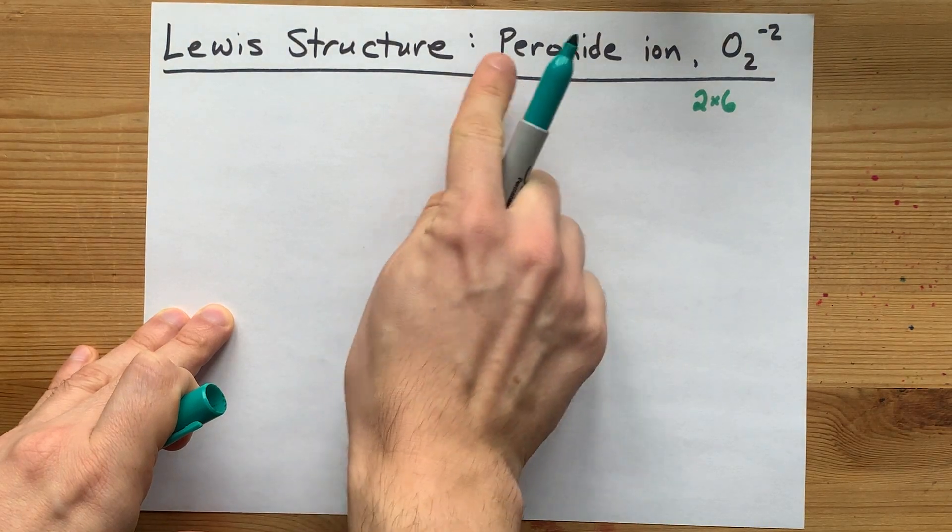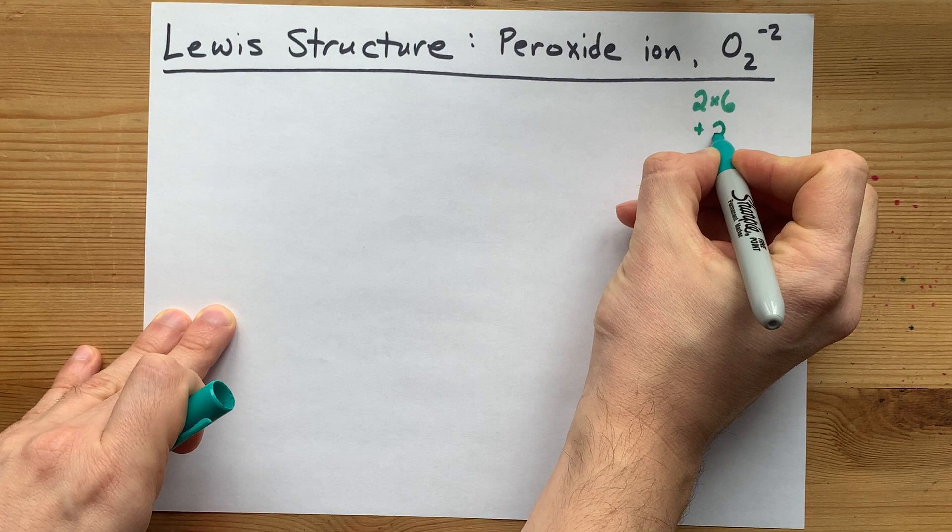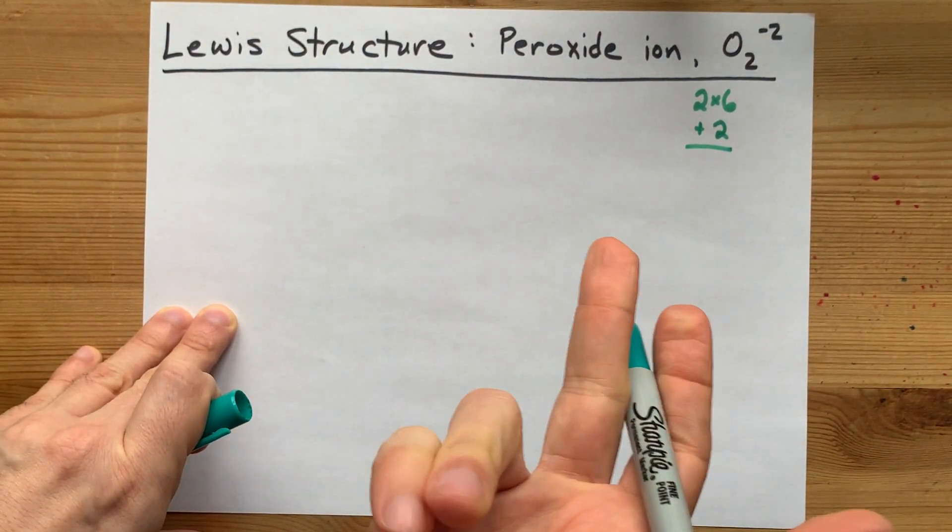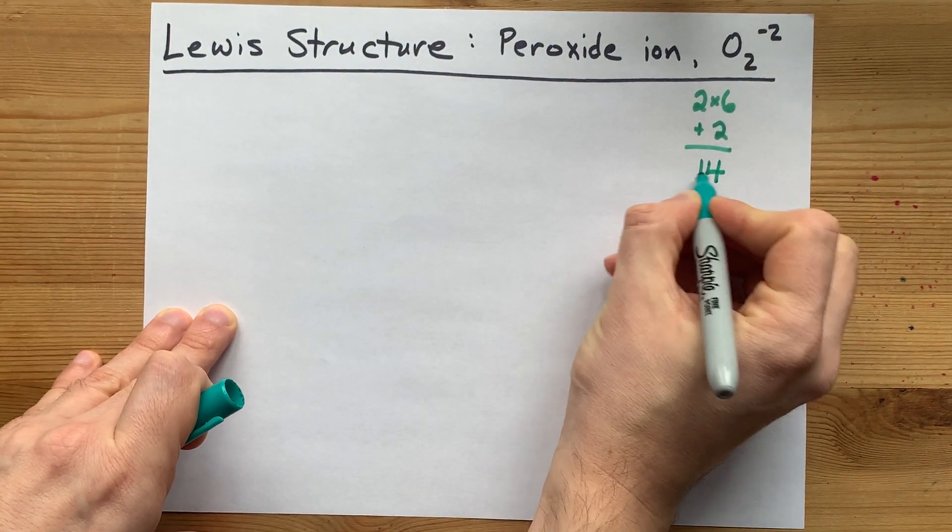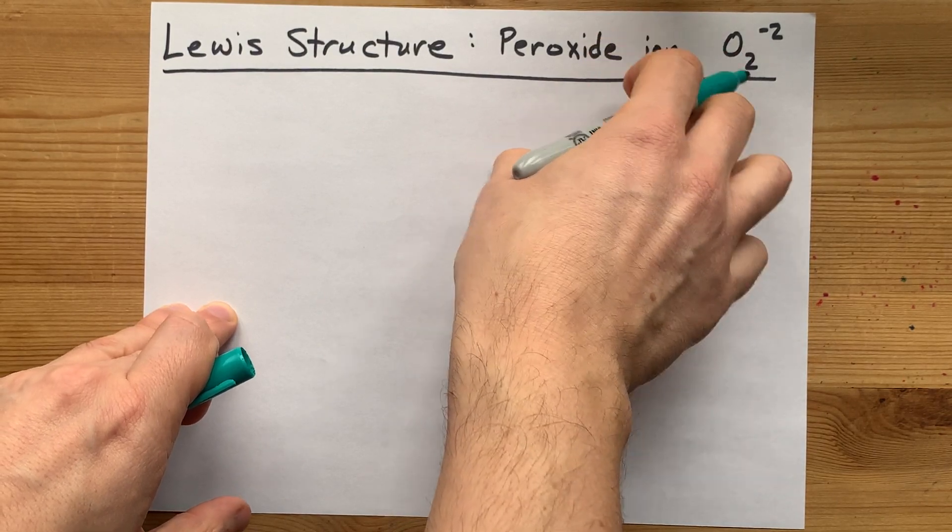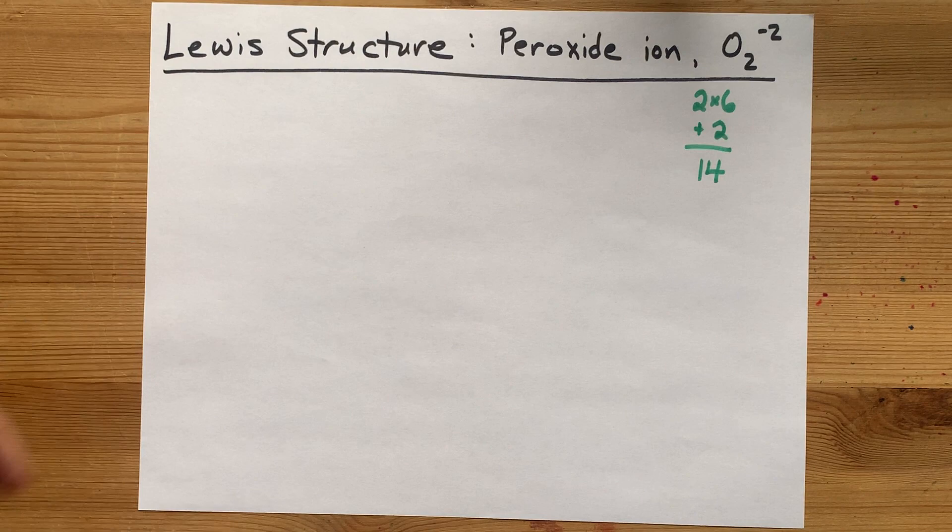But the peroxide ion has a minus two charge because it has two extra electrons from who knows where—maybe a hydrogen, maybe a sodium. The point is that the ion has 14 electrons total: 12 brought by the oxygens and two bonuses from somewhere else.